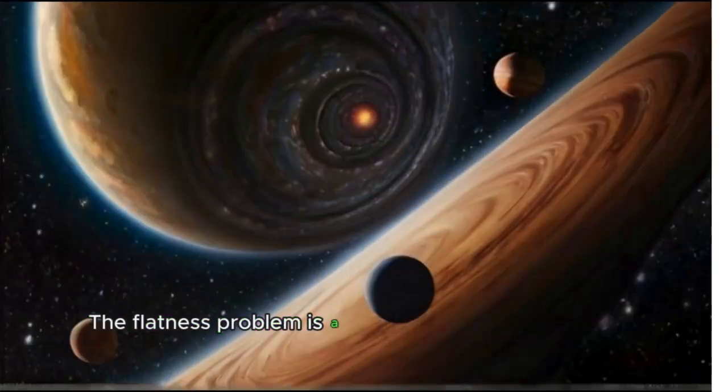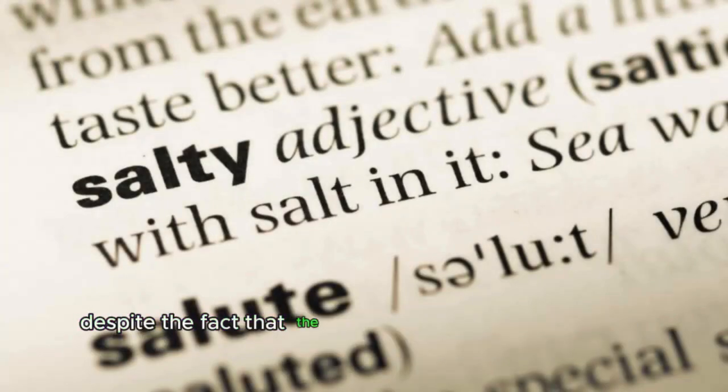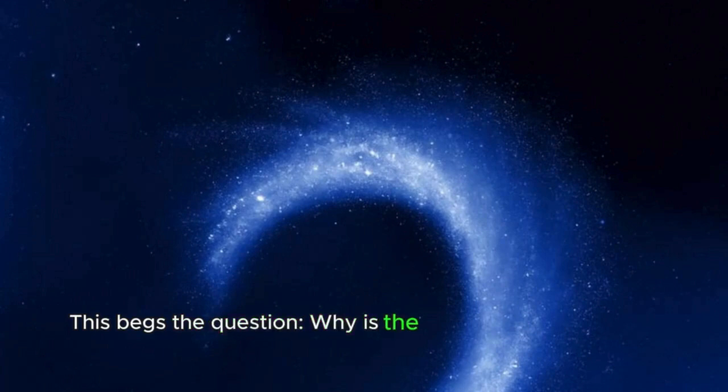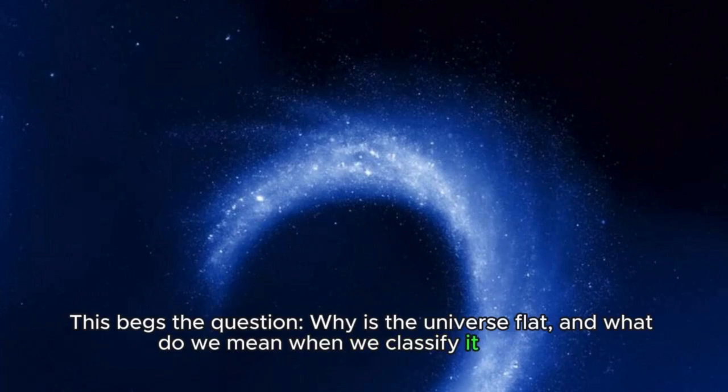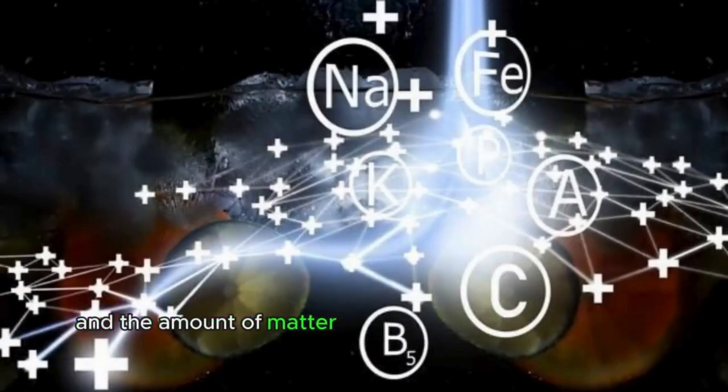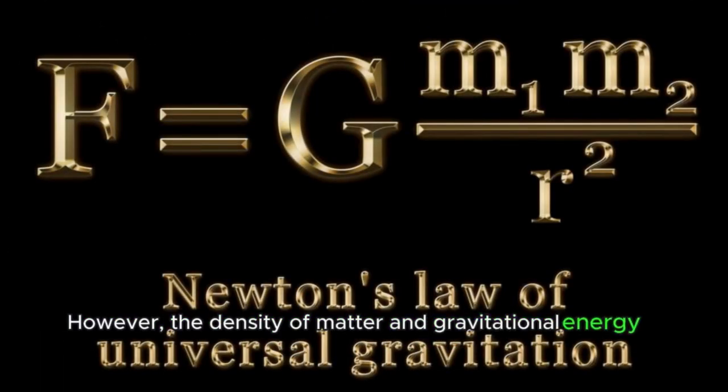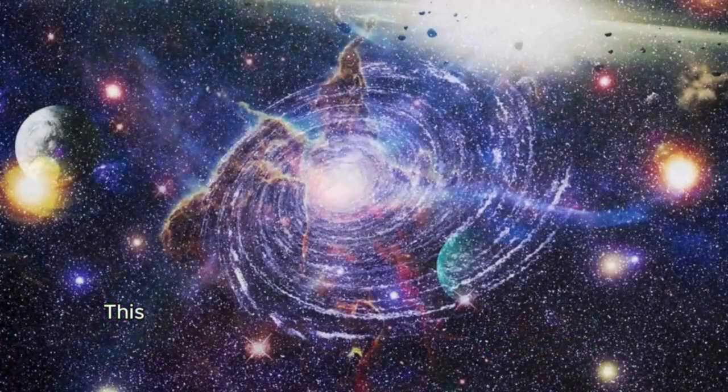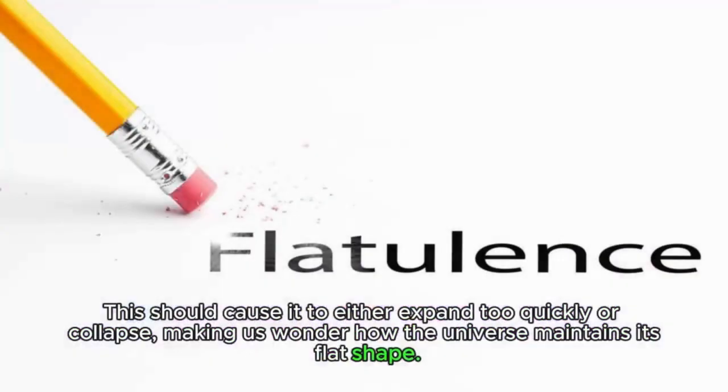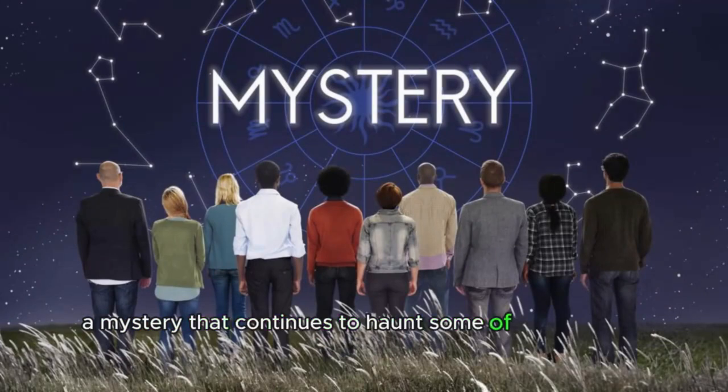The flatness problem is a paradox that arises from the observation that the universe is almost perfectly flat, despite the fact that the density of its matter is far from sufficient to maintain such a state. This begs the question, why is the universe flat, and what do we mean when we classify it as such? The flatness of the universe means that space-time is not curved, and the amount of matter and energy is just right for the universe to be flat. However, the density of matter and gravitational energy in the universe are much lower than necessary. This should cause it to either expand too quickly or collapse, making us wonder how the universe maintains its flat shape. In a nutshell, that's the essential principle of the flatness problem.